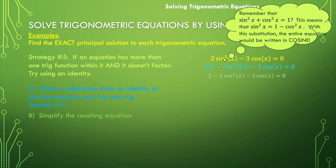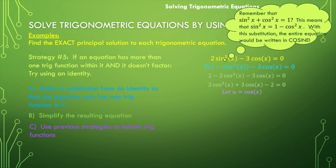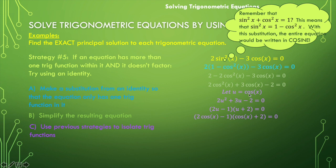Think about rearranging the terms and multiplying by negative one. Either way, you should get two cosine squared of x plus three cosine of x minus two is equal to zero. Now I can treat this like a quadratic and make a u substitution. Let's say that u is equal to cosine of x. That would mean this function now looks like two u squared plus three u minus two is equal to zero. I can factor it, and then back substitute cosine of x wherever I see u.